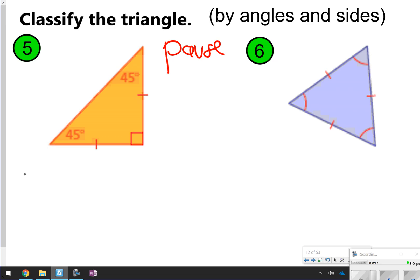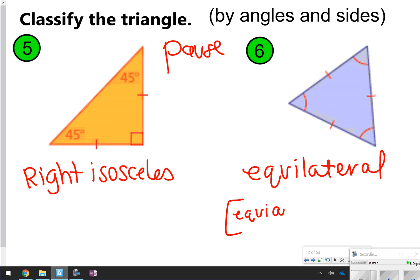This first one, number five, has a right angle and it has two sides that are the same, so that would be a right isosceles. For number six, this one has all equal sides and all equal angles, so you could just call this one simply equilateral. If you wanted to be more specific, you could say equiangular equilateral. Try to say that ten times fast.